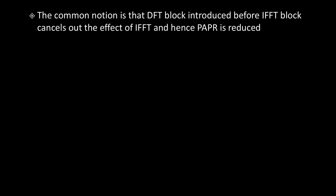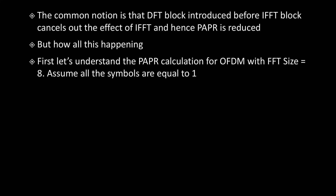So far we have seen how DFTS is done and the results showing how much improvement it gives. But if you wonder how exactly DFTS is achieving this, the common notion is that the DFTS block introduced before the IFFT block cancels out the effect of the IFFT, and hence PAPR is reduced. The difference between the DFTS size and the IFFT size is actually proportional to the gain in PAPR. Let's understand this through the PAPR calculation for OFDM with FFT size equals to 8.